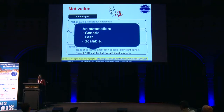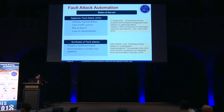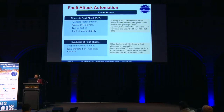So the call of the time is automation. What properties should we expect? It should be generic enough to scale for all possible block ciphers, it has to be fast enough, and it has to be scalable for large ciphers like AES. In this context, there are a couple of works at the algorithmic level. The most remarkable one is Zhang's algebraic fault attack, which provides a generic presentation of ciphers using polynomials as well as the faults, and uses SAT solvers to solve them.